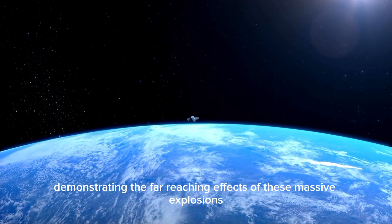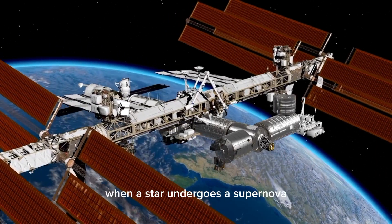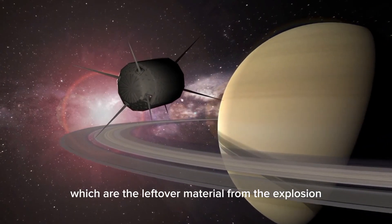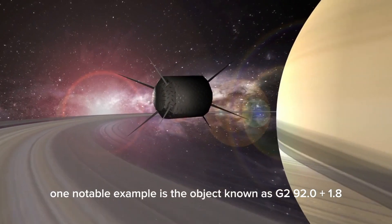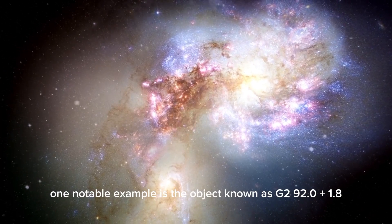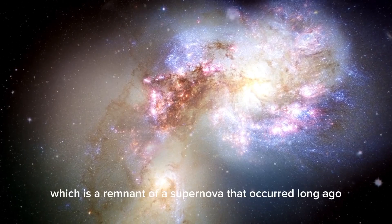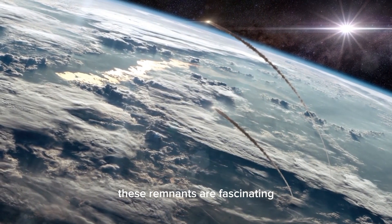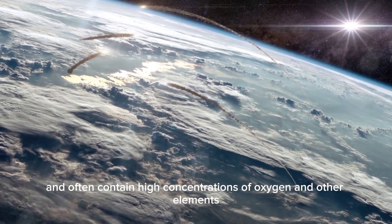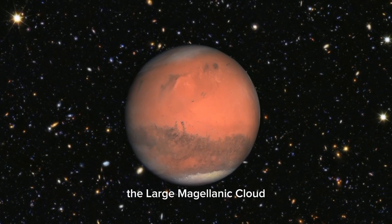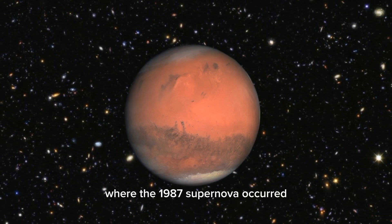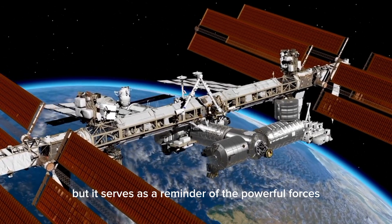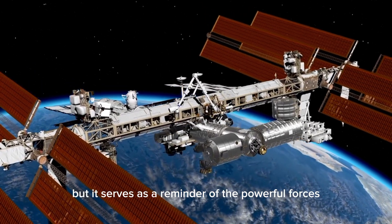When a star undergoes a supernova, it leaves behind remnants, which are the leftover material from the explosion. One notable example is the object known as G292.0 plus 1.8, which is a remnant of a supernova that occurred long ago. These remnants are fascinating and often contain high concentrations of oxygen and other elements. The Large Magellanic Cloud serves as a reminder of the powerful forces at work in the universe.